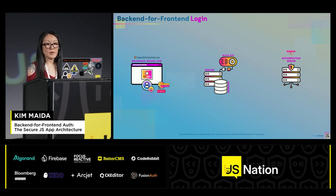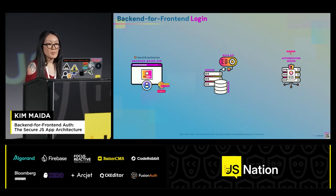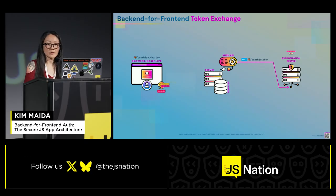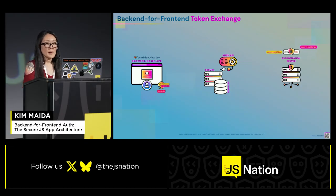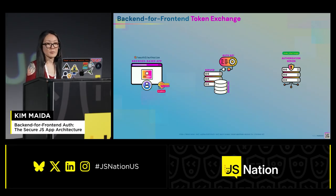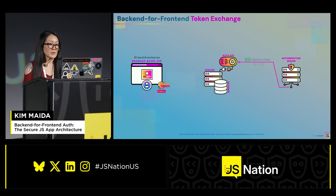The auth server verifies the user's credentials and redirects to the back-end callback route with the authorization code. The back-end calls the auth server's token endpoint, and it includes the client secret, the code, and the code verifier. The auth server uses the code challenge method to create the code challenge and then match it to the one from the authorization request. If all this is successful, then the authorization server returns tokens.